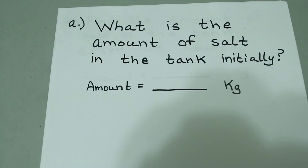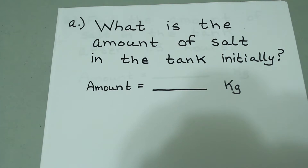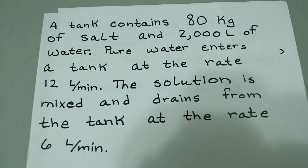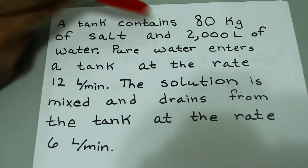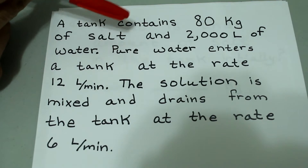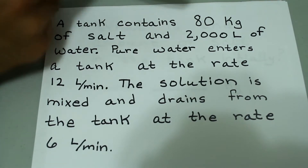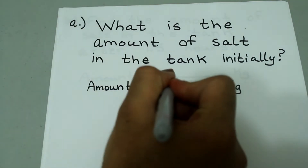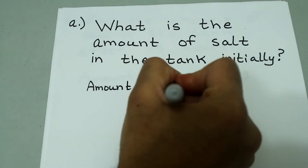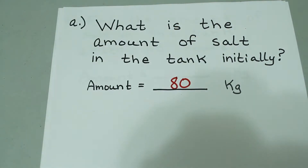The first question is kind of a freebie. It says, what is the amount of salt in the tank initially? If you just refer to the information given to us, we know that the tank contains 80 kilograms of salt and 2000 liters of water. So this is 80 kilograms of salt initially, and 80 kilograms is just the answer.